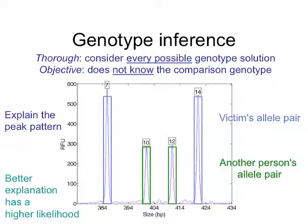This is probably the key slide if you want to understand how the computer thinks — it's when juries lean forward. Two key concepts in genotype inference. A genotype is that allele pair of a contributor. First, it's very thorough: by computer simulation, it considers hundreds of thousands of possible solutions. It works ab initio, trying out everything it possibly can. It's objective in that it does not know what you're looking for — it just works from the data, with a goal to explain the peak pattern. Underneath you can see peaks at 7, 10, 12, and 14. The large blue pair is a major contributor, and the genotype shown as 10-12 is a minor contributor from a second individual.